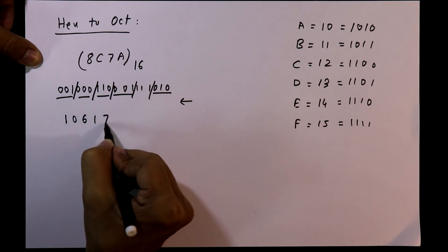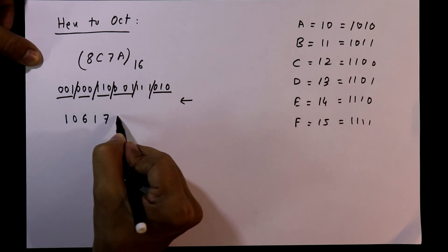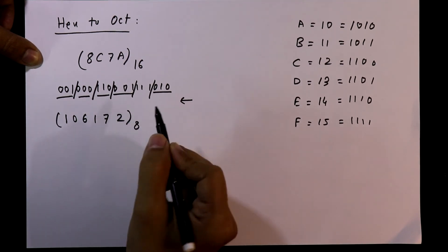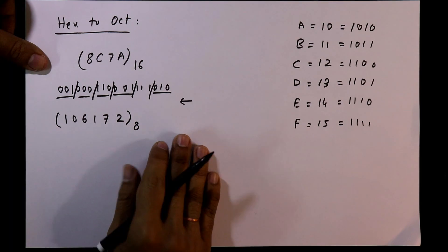111 it is 7, and 010 it is 2. So this is how we have to convert a hexadecimal number to octal number.